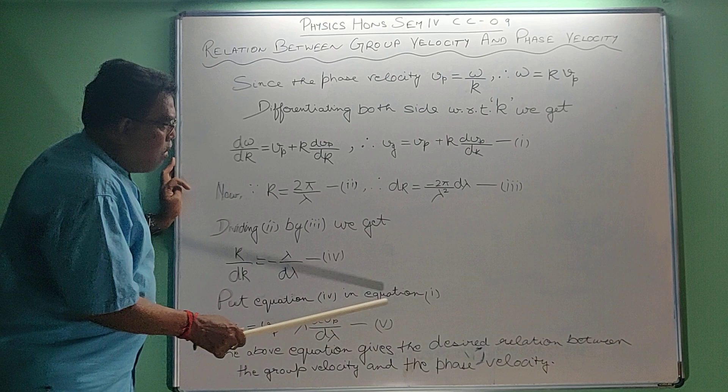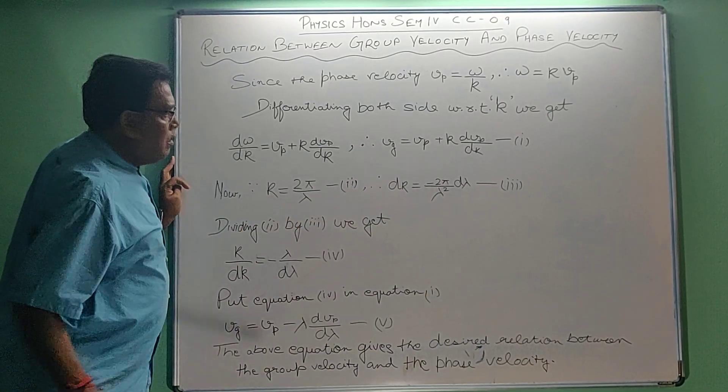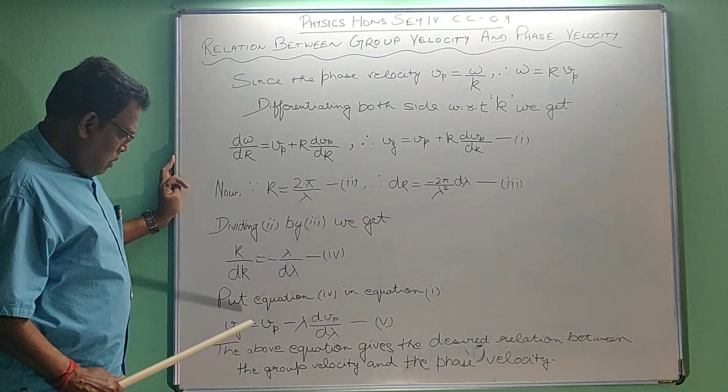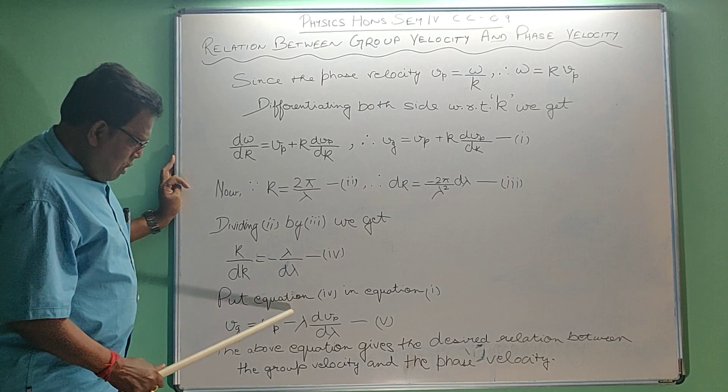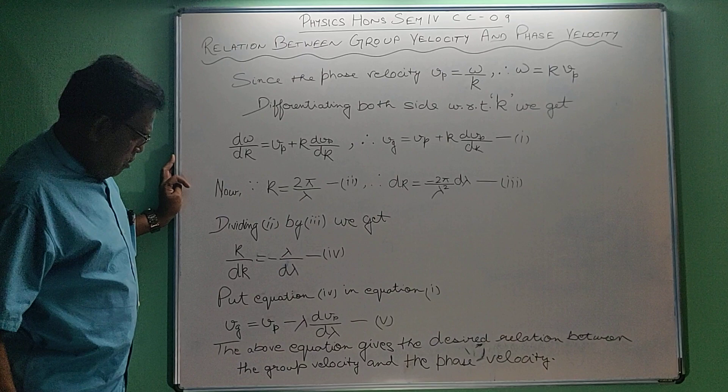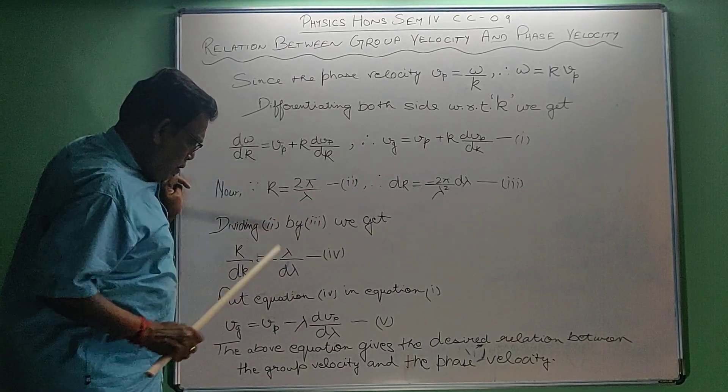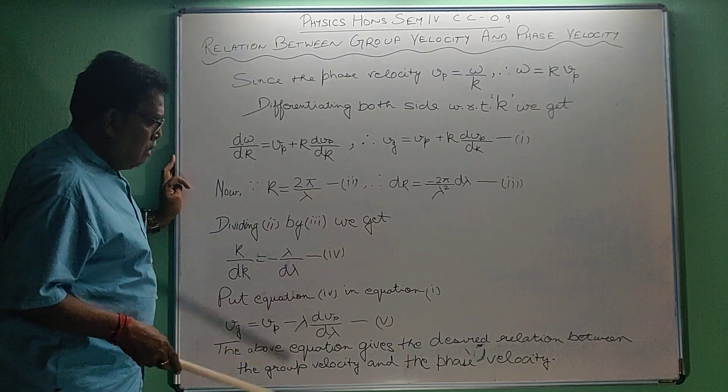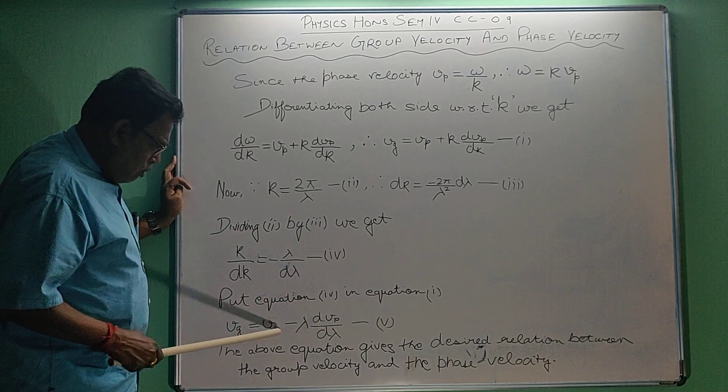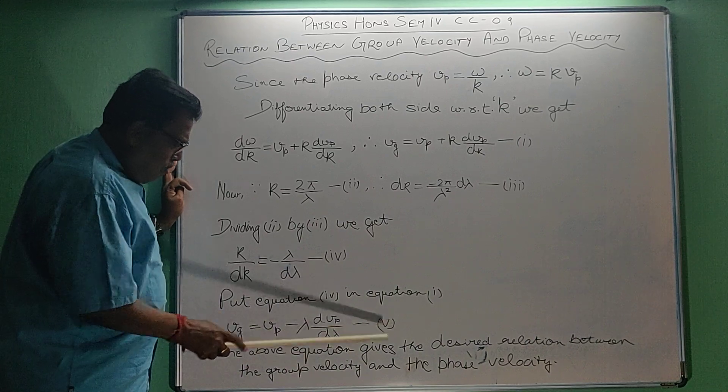Put equation 4 in equation 1. We get vg equal to vp minus lambda dvp by d lambda. Because k by dk becomes this one. The equation becomes vg equal to vp minus lambda dvp by d lambda. It is equation 5.